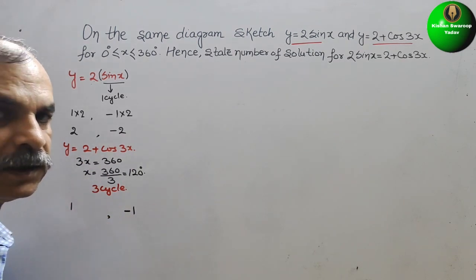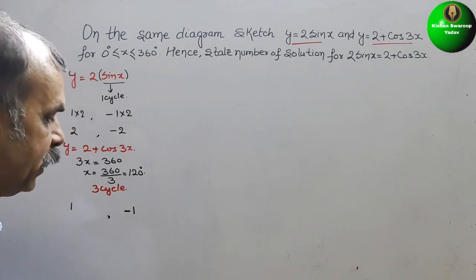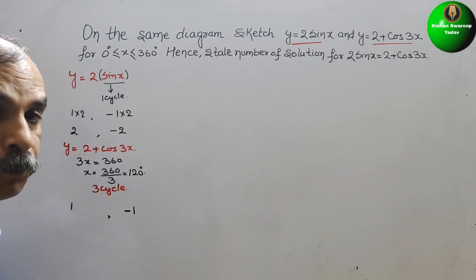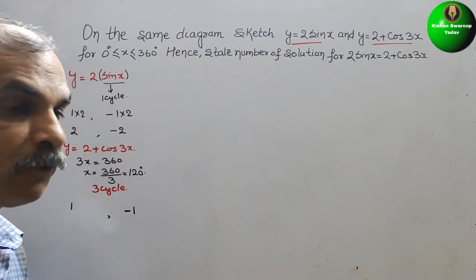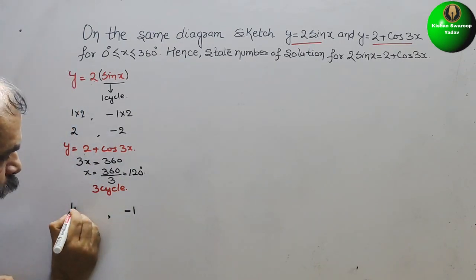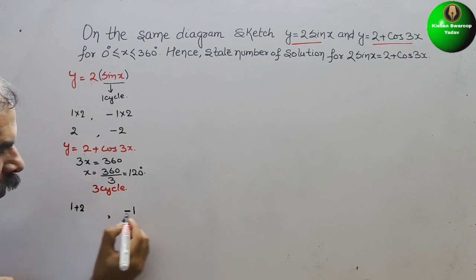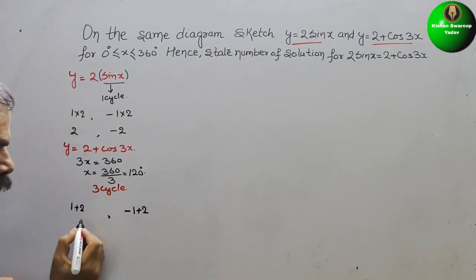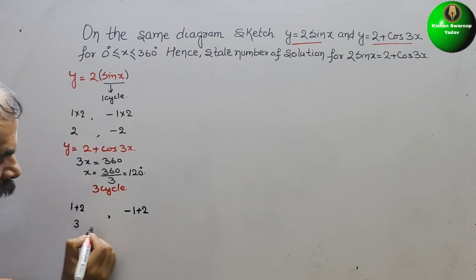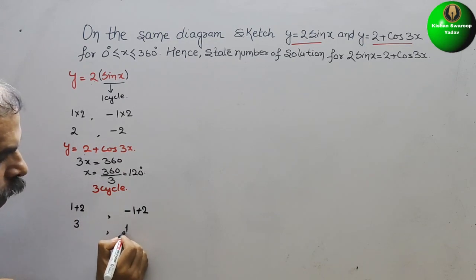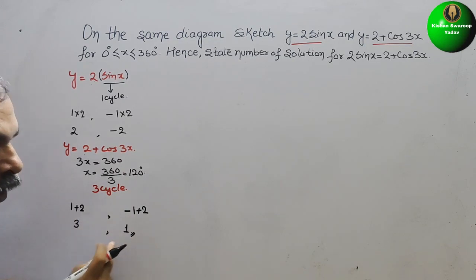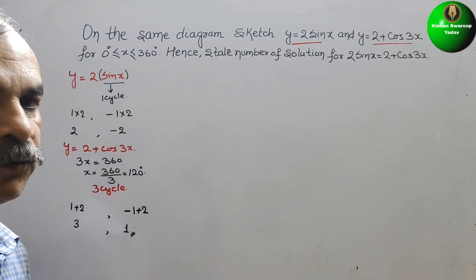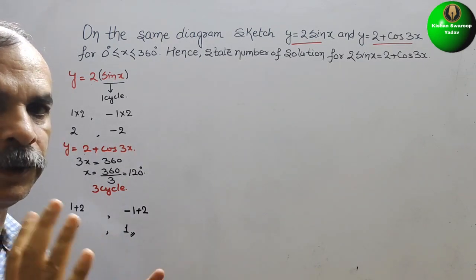For the amplitude: cosine varies from +1 to −1. But here we have 2 + cos 3x, so we add 2 to each value: 1 + 2 = 3 and −1 + 2 = 1. The cosine wave will vary from 3 to 1.